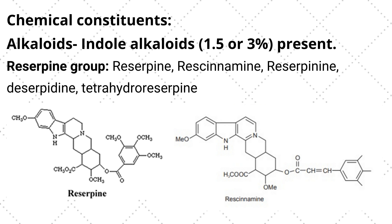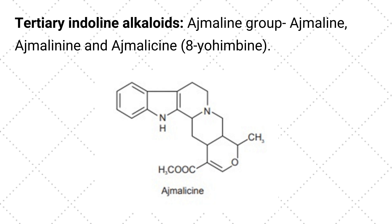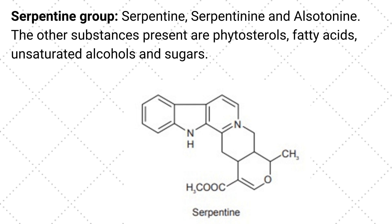The active constituents present in Rauwolfia are indole alkaloids, grouped into three categories. First is the reserpine group — example: reserpine, resinamide, reserpinine, deserpidine, etc. Second is the tertiary indoleine alkaloid, the ajmaline group, which includes ajmaline, ajmalicine, ajmalacine. Third is the serpentine group, which includes serpentine, serpentinine, alstonine. Other active principles present in Rauwolfia are phytosterols, fatty acids, sugars and unsaturated alcohols.